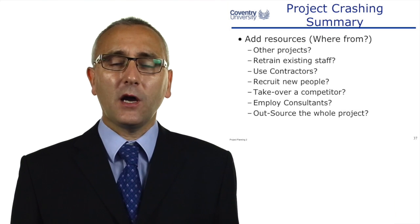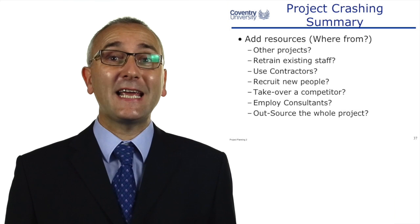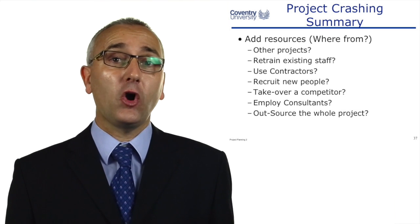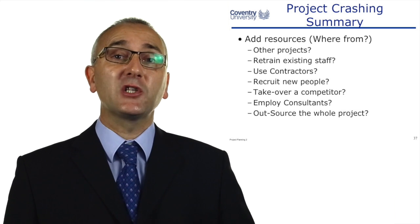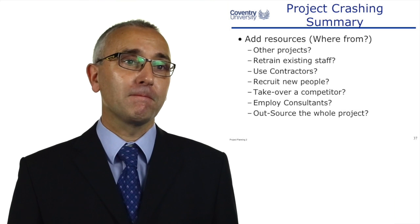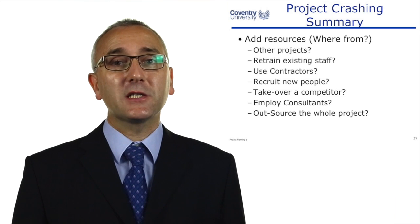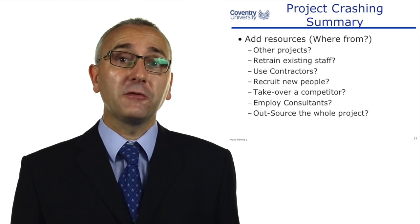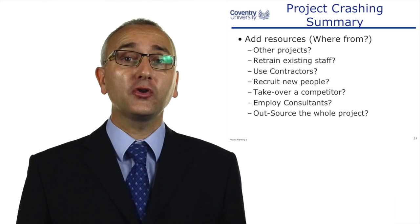If the project can't deliver to meet a particular date the company requires, one option is to buy a competitor — maybe they already have that product. Buying a competitor, cancelling their projects, and moving their staff to us is an option available. Employing consultants to look at the project plan and the way we're working can help sort out how we save some time. Outsourcing the whole project is another option — some famous vehicle manufacturing design projects in the late 1990s, like the Range Rover redesign, were created not by Rover or BMW engineers but by an external design contract house.